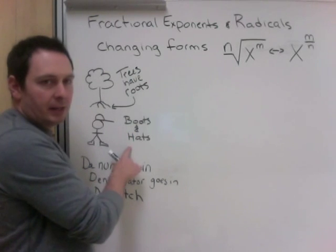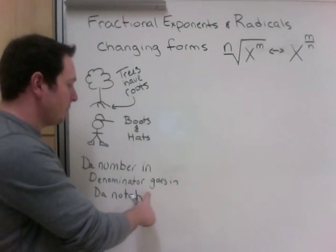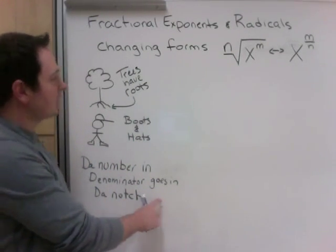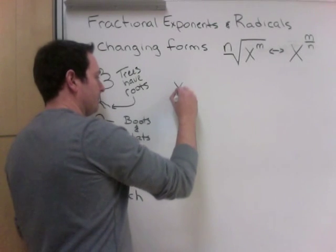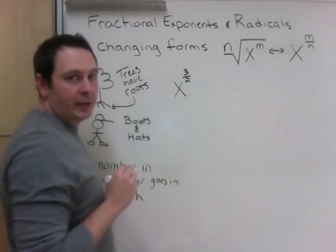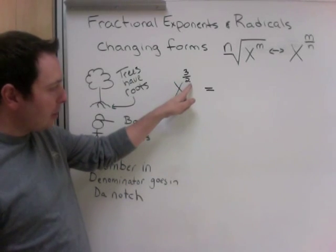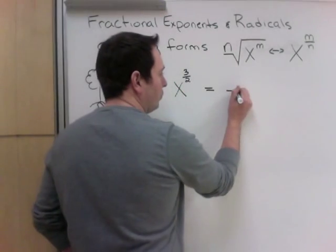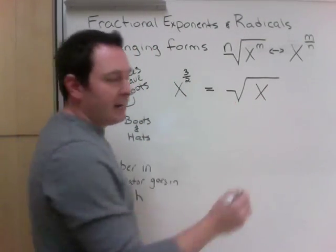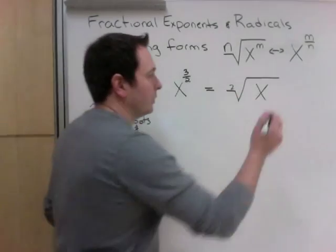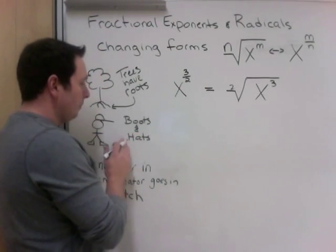This first method I've always used; the second I learned from Mr. Bennett, a teacher at Bert Bowes Math; and the third is from Mrs. Malcolm. For 'trees have roots': if I have x to the power of 3 halves, the roots are on the bottom of a tree, so the 2 is the root part. That gives us the square root of x cubed.